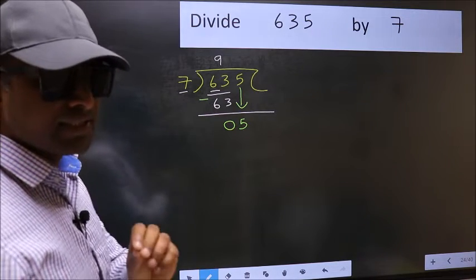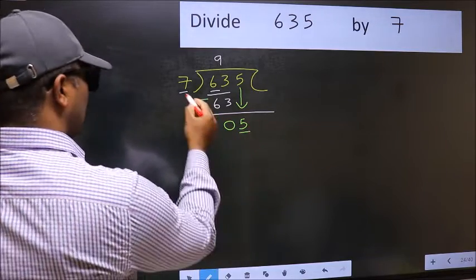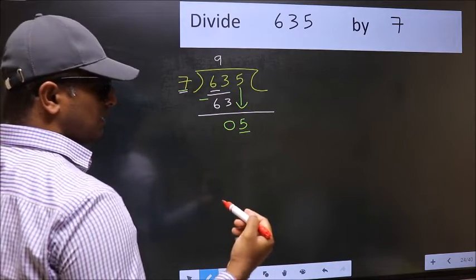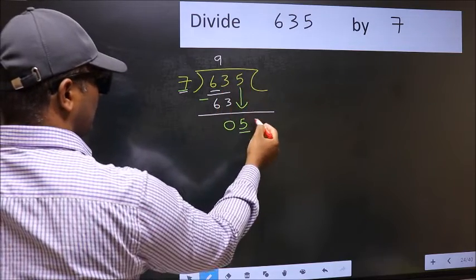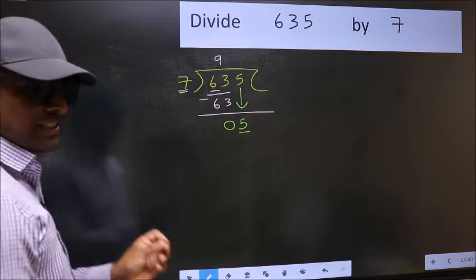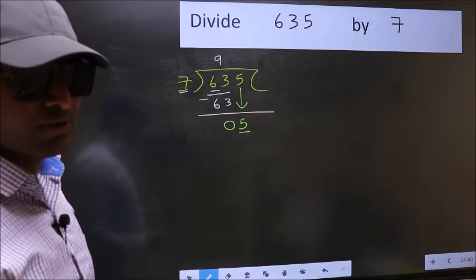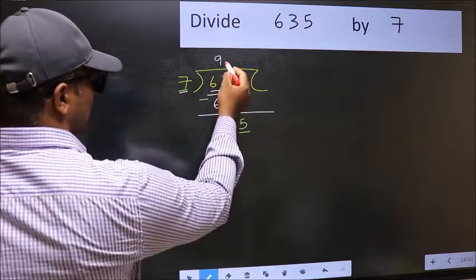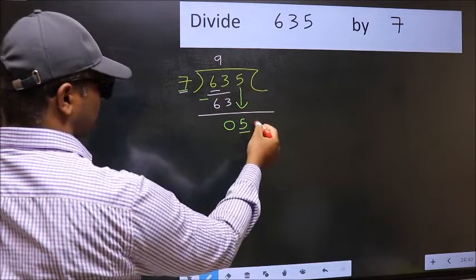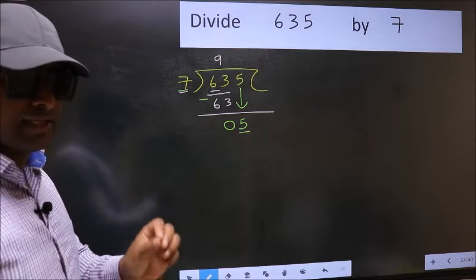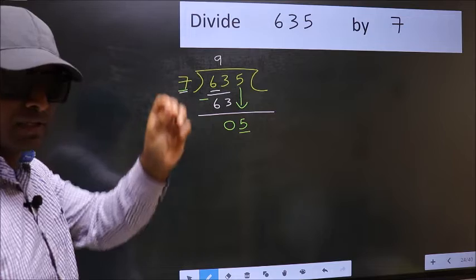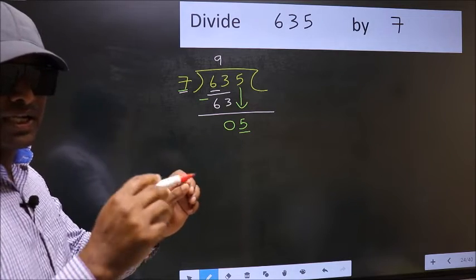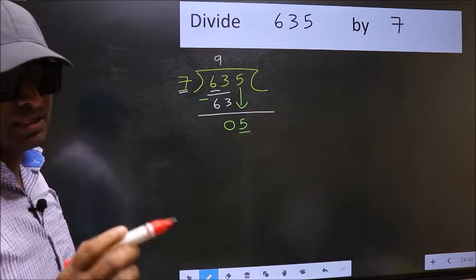And the mistake is this: Here we have 5 and take 0, which is wrong. I repeat: bringing the number down and also put dot take 0 both at the same step, you should not do.